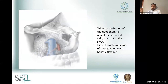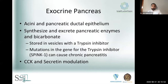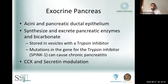Very often these procedures start with a wide Kocher maneuver, since the head of the pancreas is retroperitoneal. Performing this wide Kocher maneuver is part of mobilizing it and usually gives you exposure to the superior mesenteric artery posteriorly. Mobilizing some of the right colon helps obtain that exposure as well. Most of what we'll be talking about today is the exocrine pancreas — the pancreas is actually two organs fused in one: the exocrine and the endocrine pancreas.